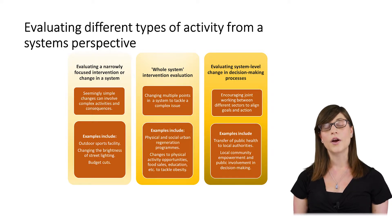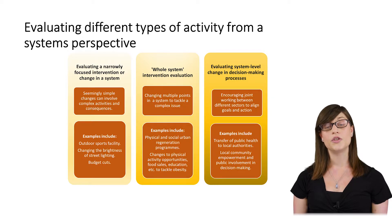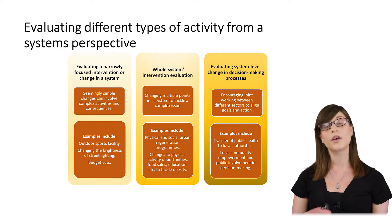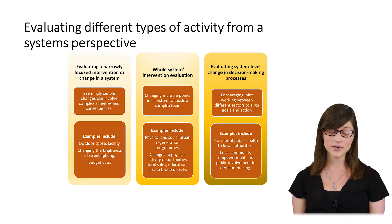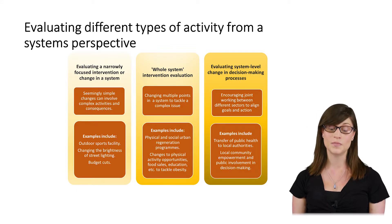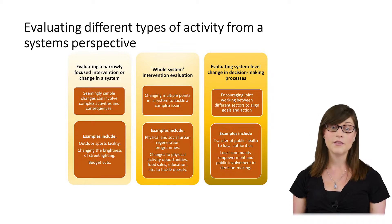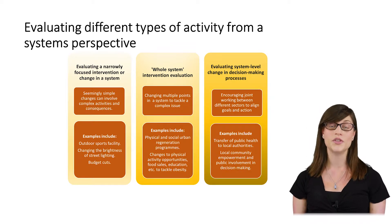We can also evaluate what are called whole system interventions — where you try to change multiple points of the system at once. An example might be an urban regeneration activity. In these cases, evaluations can look at individual components of a broader program, or at the overall impacts of that program from a systems perspective. An evaluation might also focus on how different stakeholders have worked together — what helps or hinders joint working and what it achieves. This takes us to the third type: evaluating system-level change in decision-making processes, which considers the complexities of achieving such change and the complex way the system responds.